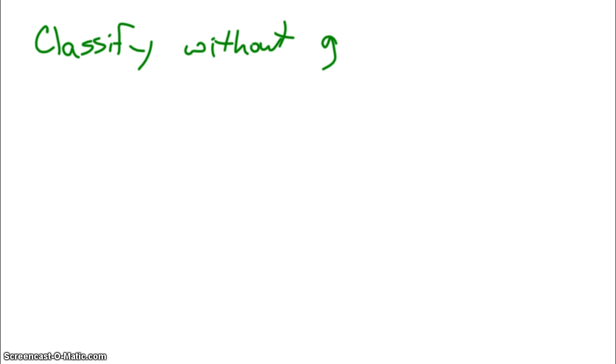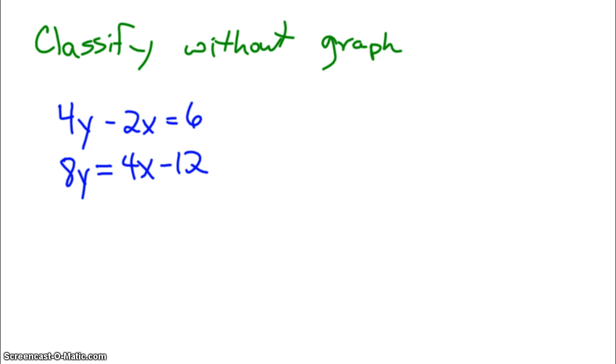We just talked about what it looks like when you graph, but let's talk about how you would classify without graphing. Let's work on the system, 4y minus 2x equals 6, and 8y equals 4x minus 12. So, if this is our system,